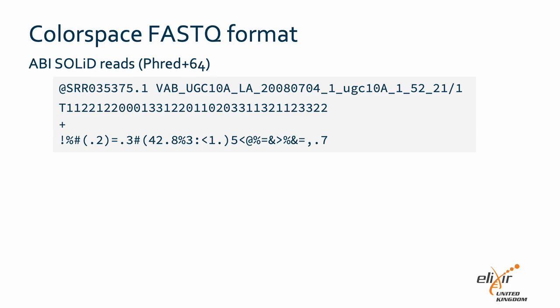Presenting raw sequencing data as individual bases is known as base space. Color space fastq files follow the same general format, but differ in the way the raw sequence is presented. Each raw sequence starts with a base, but is then followed by a series of single digit integer values for the remaining length of the read. Color space files were primarily generated by the ABI SOLiD sequencing platform, and are not routinely used anymore following the subsequent dominance of Illumina sequencers. However, SOLiD data still represents a rich resource in public sequencing archives, as long as the data are well understood. SOLiD data typically follows the older PHRED64 quality scoring system.